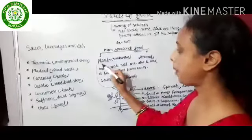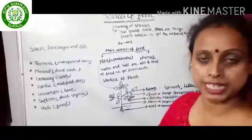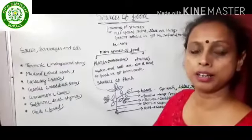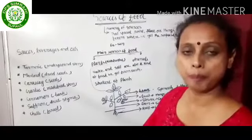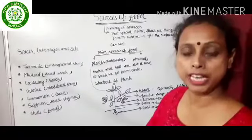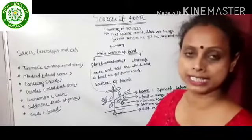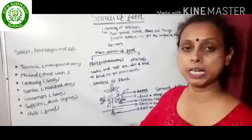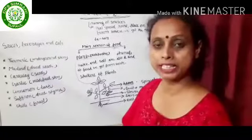Plants are autotrophic. Autotrophic means plants have the capacity to make their own food through the process of photosynthesis — in the presence of sunlight, in the presence of chlorophyll, and in the presence of carbon dioxide and water. They can make their food.